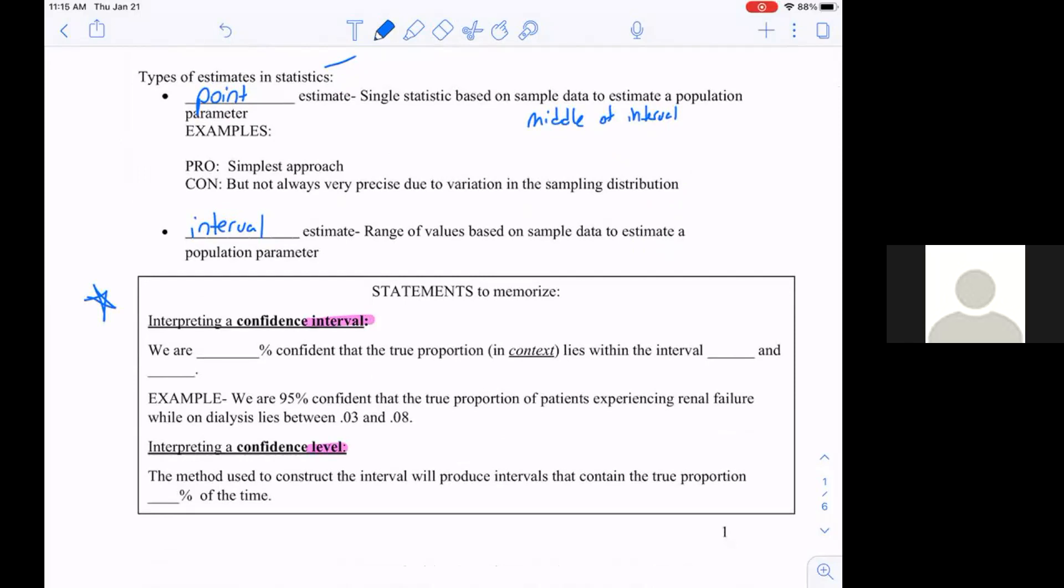In a confidence interval, we are 95 percent confident, for example, that the true proportion in context lies within the interval of blank and blank.